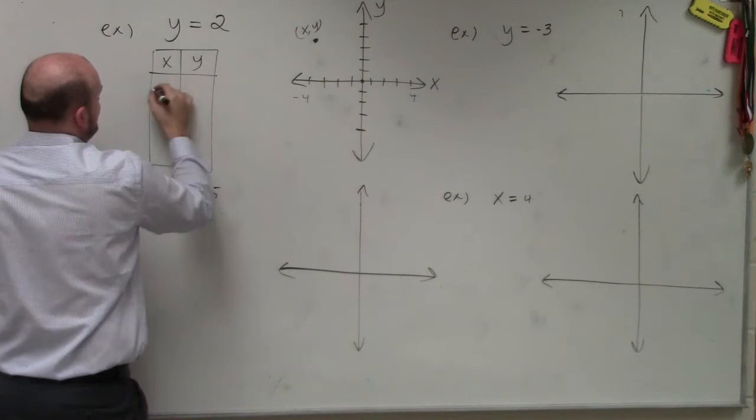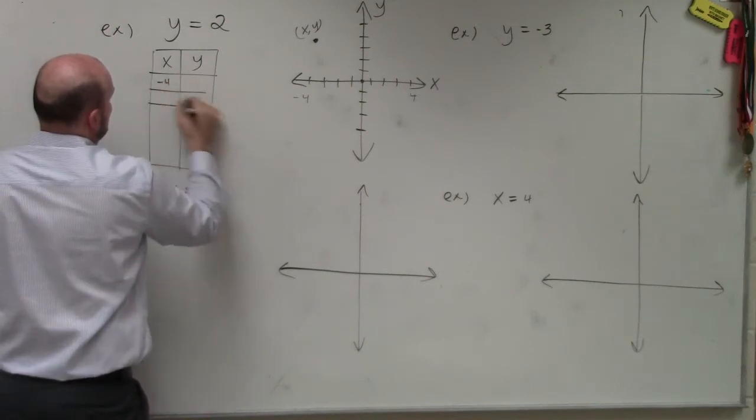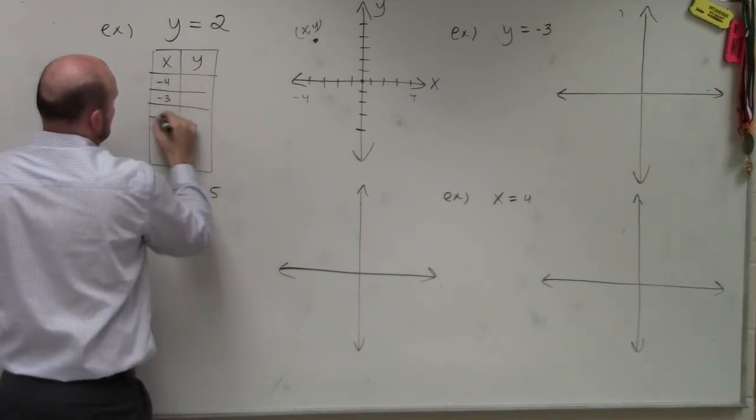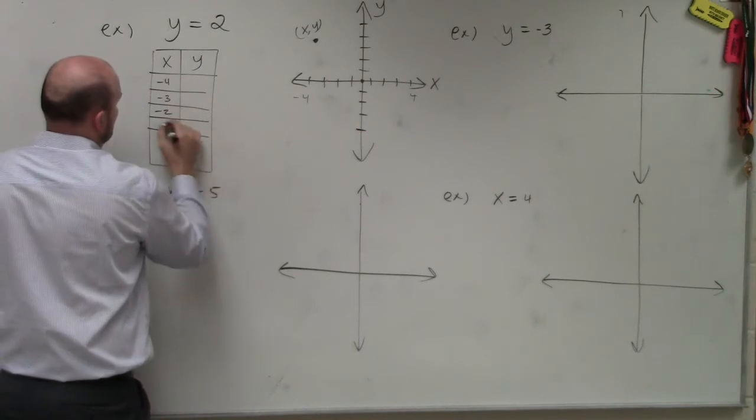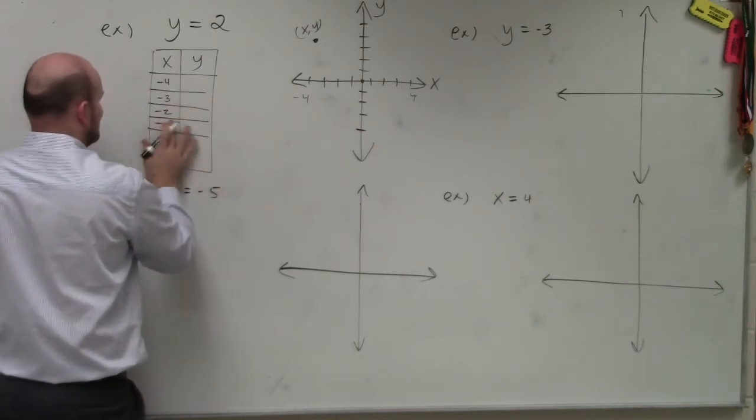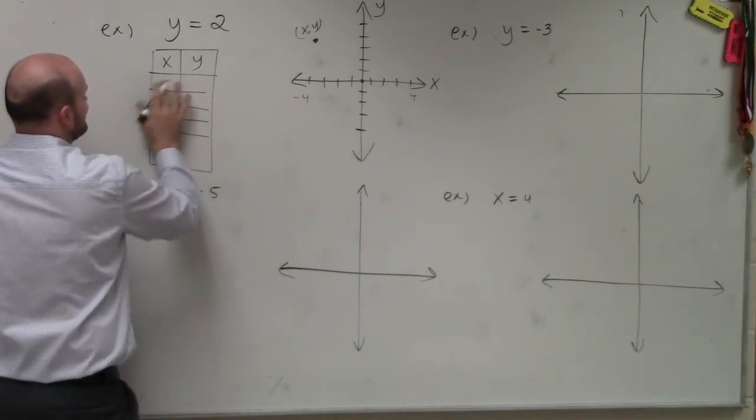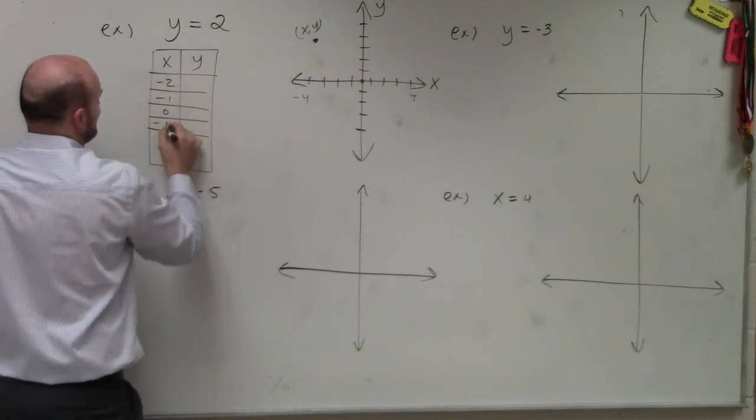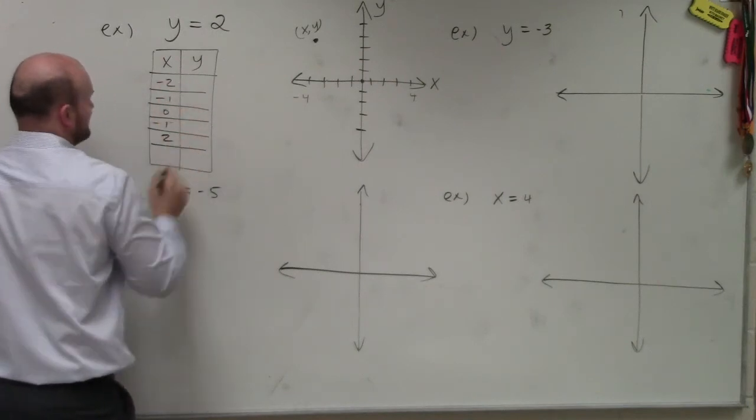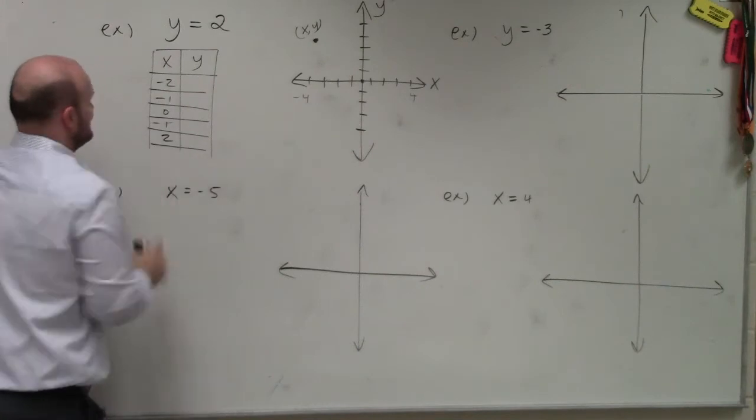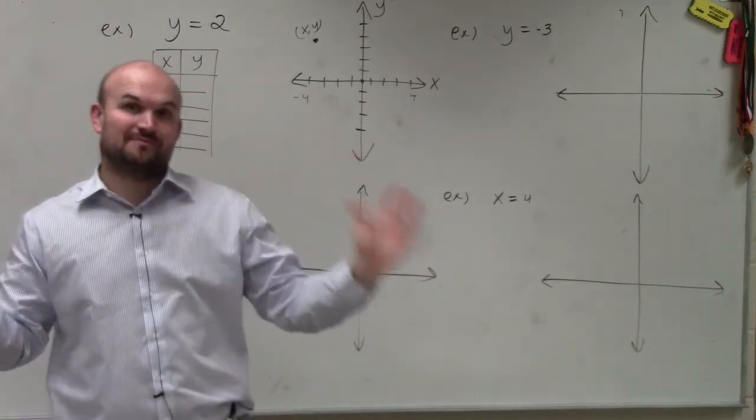So I have x-coordinates and y-coordinates. And I'm going to go to negative 4, negative 3, negative 2, negative 1. I'm not going to have enough room. Let's do negative 2, negative 1, 0, 1, and 2. OK? So instead of going from negative 4 to 4, I'm just going to go from negative 2 to 2.